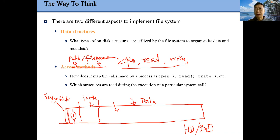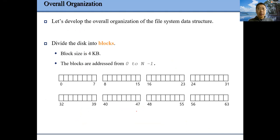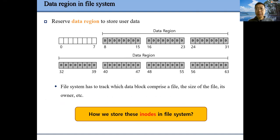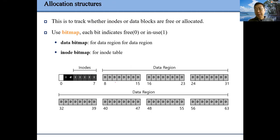We also need to store information about which inode is free and which data block is free. When we create a file, we allocate an inode and data block. When we delete a file, we release the inode and data block. To represent which inode or data block is free or allocated, we use bitmaps. Starting from this week, we will have several labs related to file system implementation.